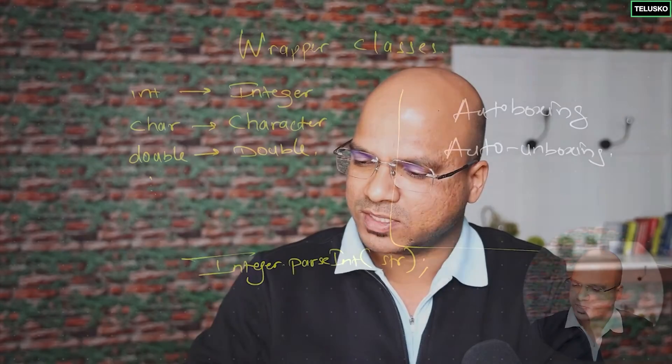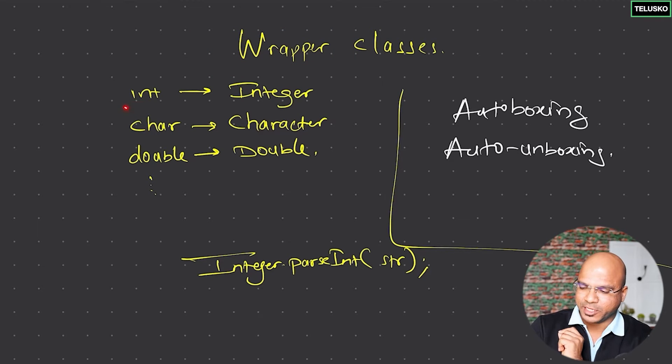You can store values directly in primitives, but there are certain features and frameworks in Java that only work with objects. For example, the collection framework — just to give a heads up, a collection is basically similar to an array. We can have primitive types in arrays, but not in collections. You need object types in collections, and that's why Java introduced the wrapper class concept.